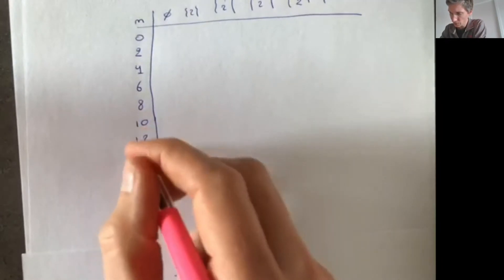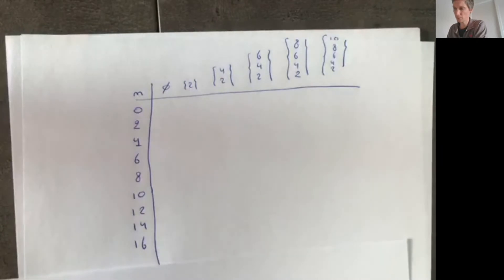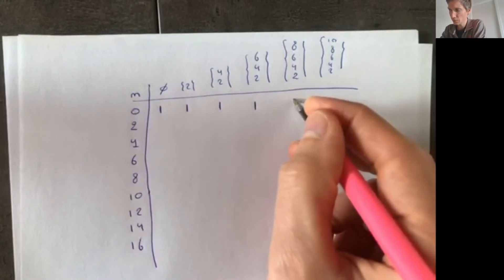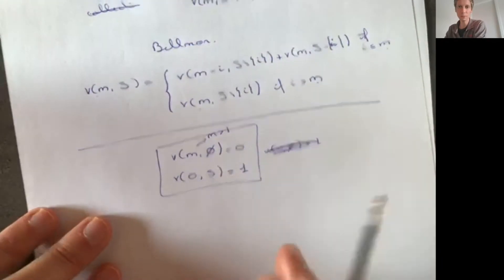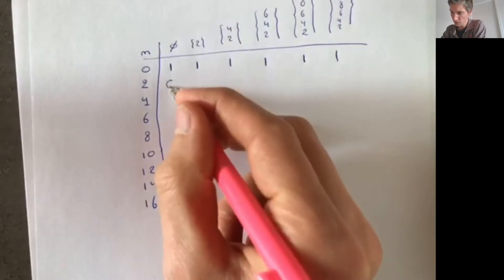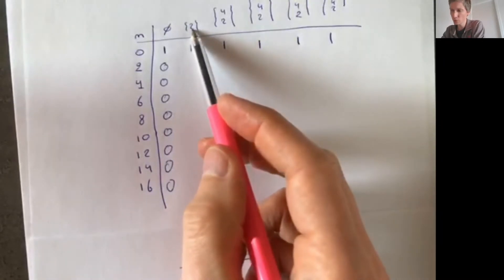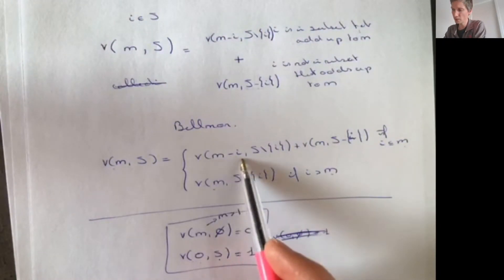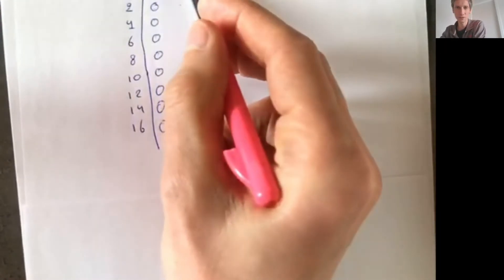We can consider the two cases separately. If i is not in a subset that adds up to m, there are V(m, S\{i}) such subsets, because every such subset doesn't include i and has to add up to m. If i is in the subset that adds up to m, then all the elements without i must add up to m minus i, so there are V(m−i, S\{i}) such subsets. The total is the sum of both cases.